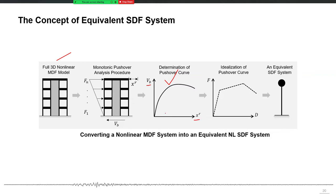Now, what you can additionally do with this pushover curve is convert it into a force-deformation curve. This curve is idealized by a few points — for example, yield point, ultimate point, and last point — so you idealize it by some trilinear curve. And then you assign this curve as a force-deformation behavior to a single degree of freedom system.